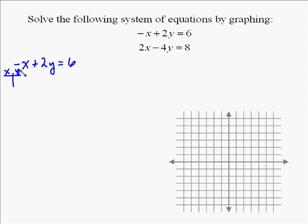So we create a table where we put a 0 in for y, and that enables us to get the x-intercept, and then we're also going to put a 0 in for x to find the y-intercept.